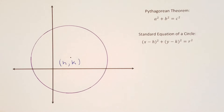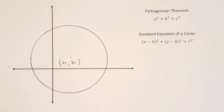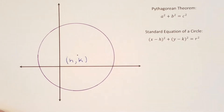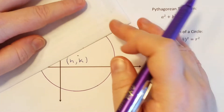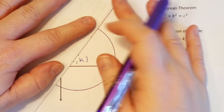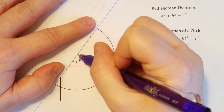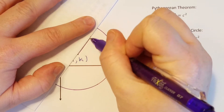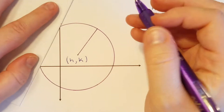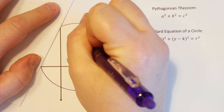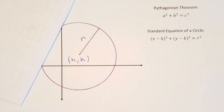So I'm going to draw a radius of my circle — out here is fine. This will be a radius, which we know is represented with r.